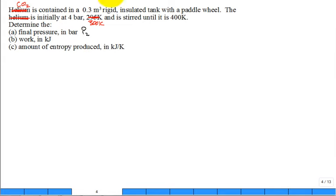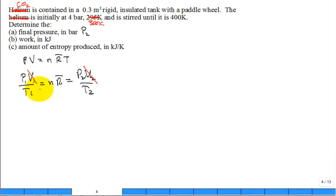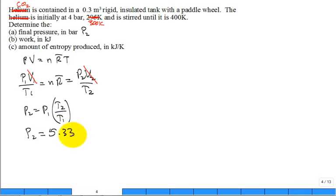Because it's an ideal gas, PV = nR̄T at all times. Writing the ideal gas equation for states 1 and 2: P1V1/T1 = P2V2/T2. Since it's a rigid tank, volume doesn't change, so V cancels. The final pressure P2 = P1 × (T2/T1) = 4 bar × (400/300) = 5.33 bar. Pressure went up.